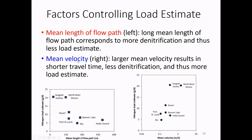We also examined mean groundwater velocity. As mean velocity increases, the nitrogen load also increases correspondingly. This is easy to understand: higher velocity means shorter travel time, which means less time for denitrification, therefore the load is higher. When doing management and looking for hot spots, you should look at areas close to water bodies or areas with higher groundwater velocity.